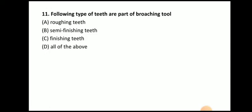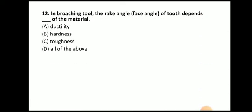Next question: which types of teeth are part of the broach tool — roughing teeth, semi-finishing teeth, finishing teeth? The answer is all of the above. At the start the broach has roughing teeth, then semi-finishing teeth, and at the last it has finishing teeth.